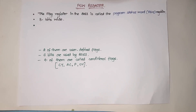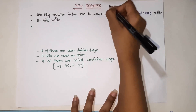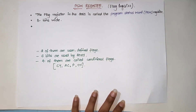Hello guys, welcome back. I am Dhruvi and today we will look at the PSW register. Unlike any other microprocessor, in 8051 we have a flag register that is used to indicate arithmetic conditions — carry flag, overflow, auxiliary — these are indicated by the PSW register. This is an 8-bit register also called as flag register.